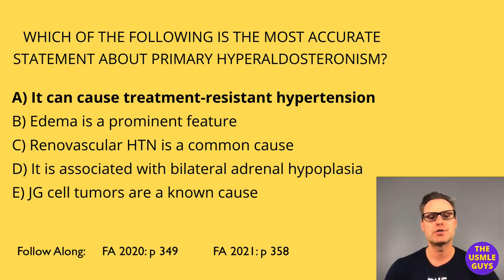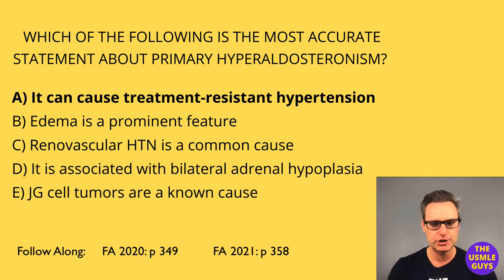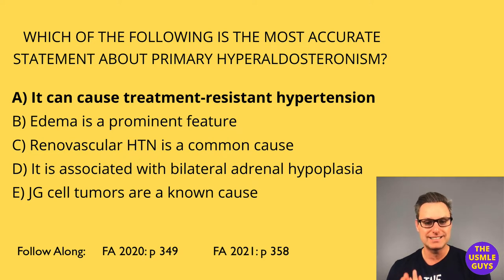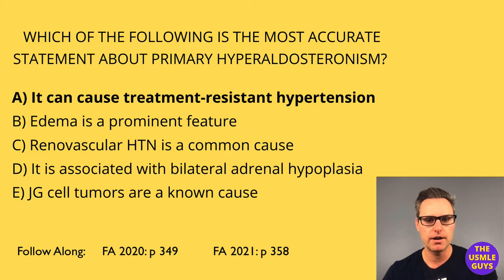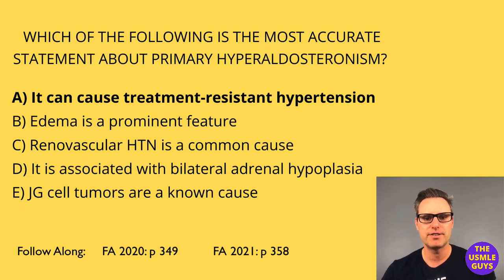The clinical features of hyperaldosteronism include hypertension, normal or decreased levels of potassium, and metabolic alkalosis. All right, let's move on from aldosteronism to our next question — go ahead and pause, try and figure this one out, and we'll see you back here in a couple of minutes.